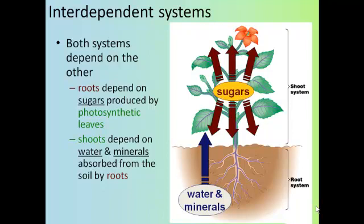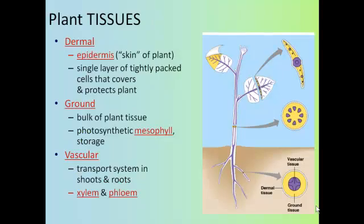Now let's move on to plant tissues. Just like there are three plant organs, there are also three plant tissues. First is dermal tissue — basically the skin of the plant — and its primary function is to prevent the dehydration of the plant. Then you have ground tissue, which makes up the bulk of the plant body. This is where photosynthesis occurs, where you will find mesophyll cells, and where storage of the carbohydrates will occur.